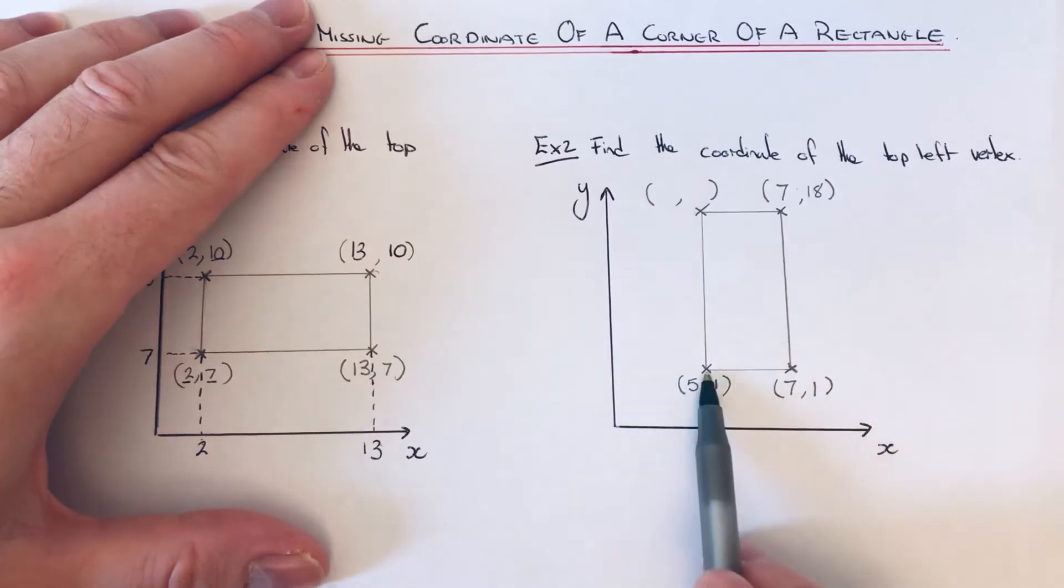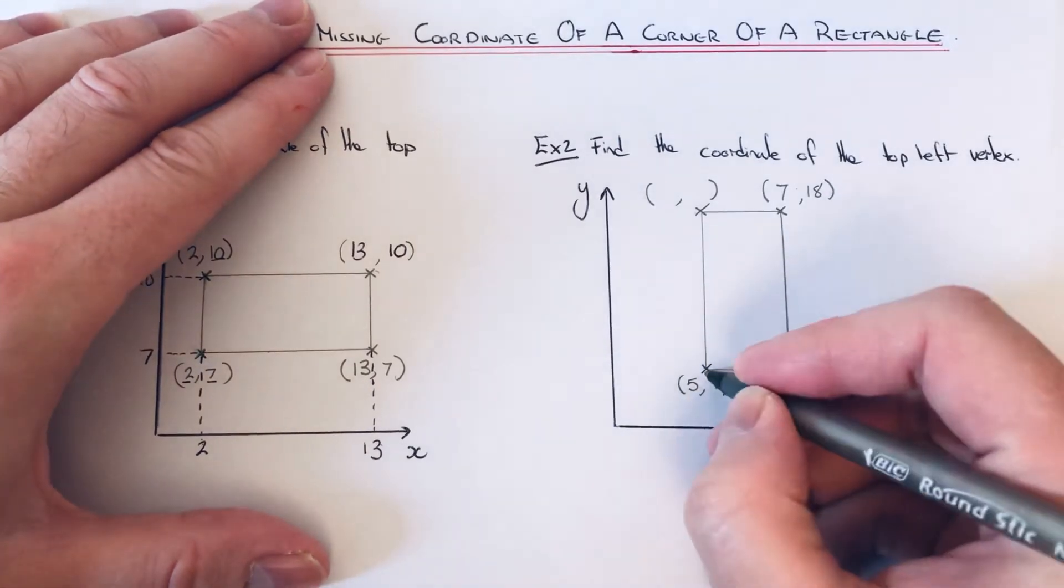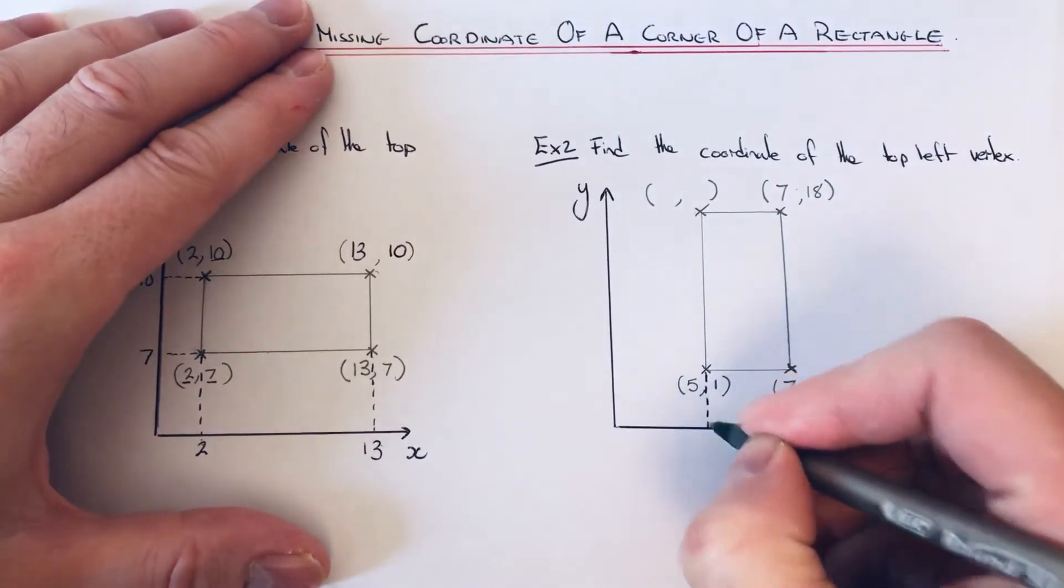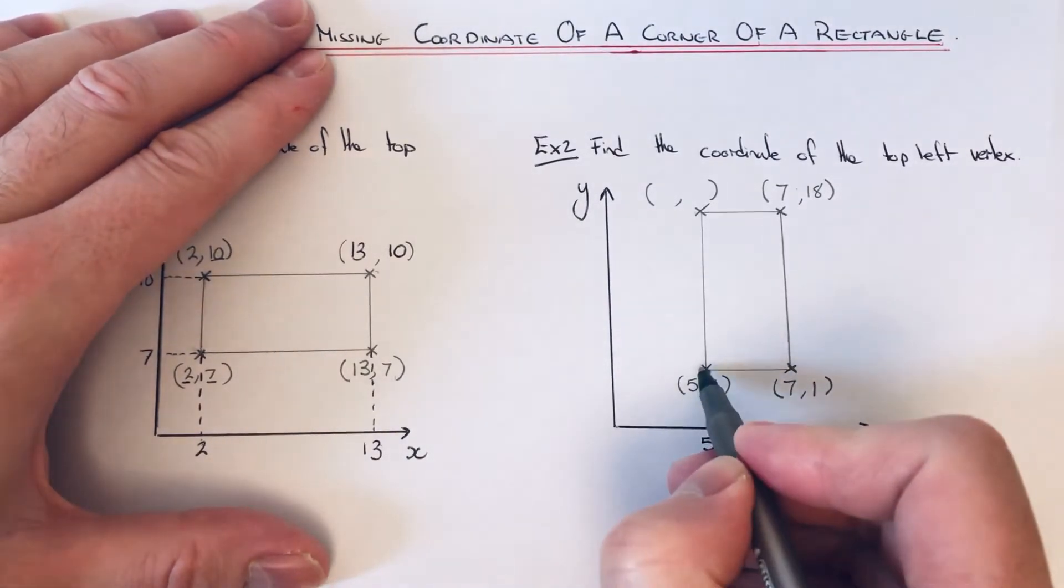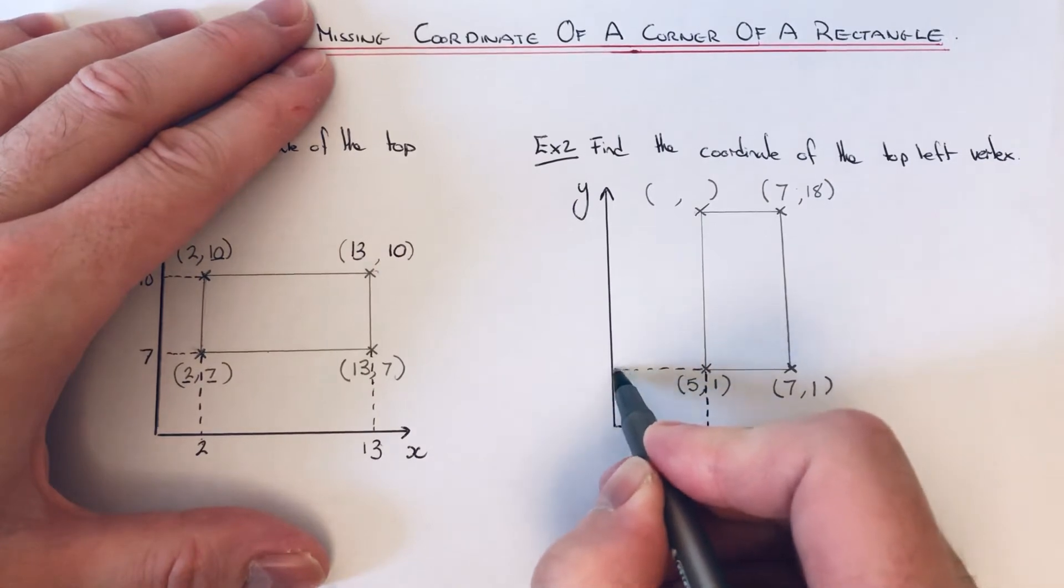Let's start with this bottom left corner. If we do a line going down, the number here will be five - that's the first number of the coordinate. The number on the y-axis here will be that number there, which is one.